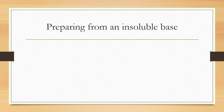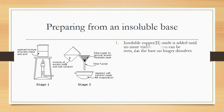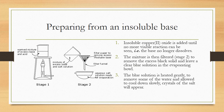For preparing a salt from an insoluble base — for example, a metal oxide — excess insoluble base is reacted with the acid to form the salt, then the unreacted base is filtered out. In this example, insoluble copper(II) oxide is added until no more visible reaction occurs. The mixture is filtered to remove excess black copper oxide solid, leaving a blue solution, which is placed in an evaporating bowl to leave crystals of the desired salt.